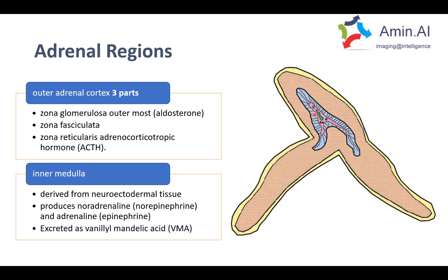If you have a tumor originating from the medulla, it will have different characteristics than adrenal cortical tumors. Most commonly we see pheochromocytoma, which predominantly originates from the medulla, whereas other regions give rise to adrenal cortical tumors.